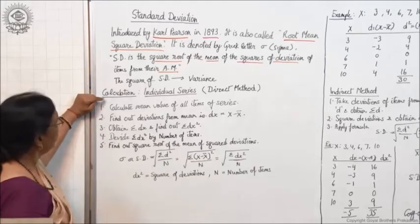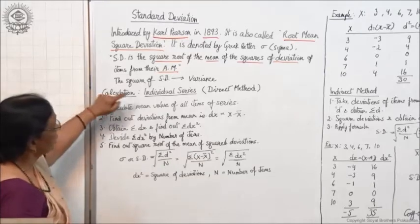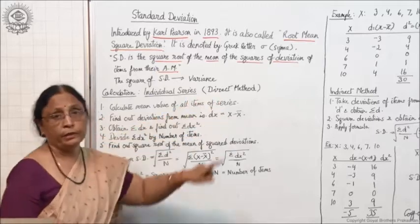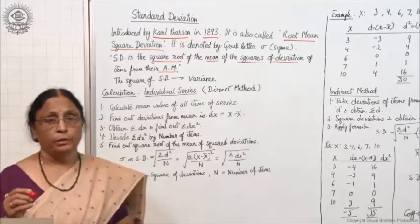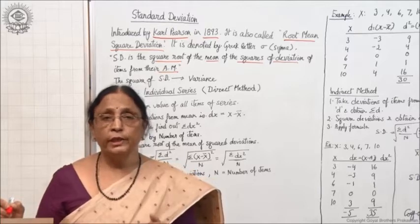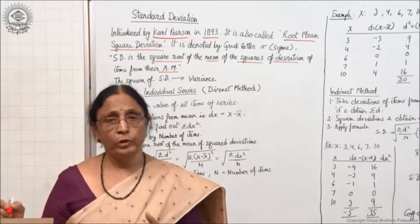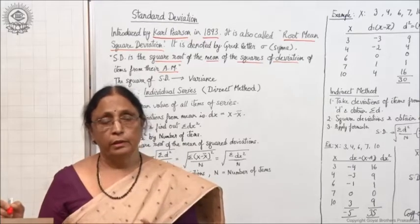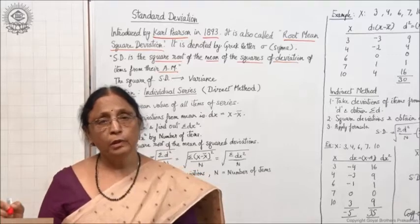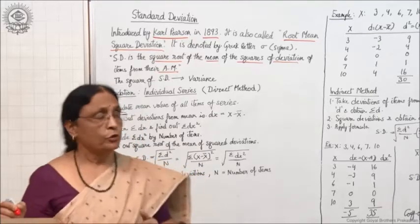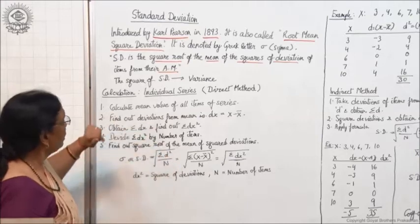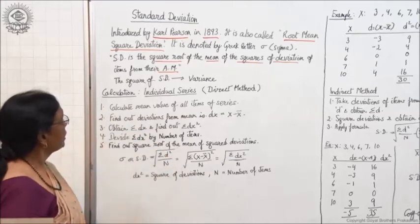Now let us see the calculation in case of individual series by the direct method. The direct method means when the deviations are taken from the actual mean. In the case of the indirect method, deviations are taken from the assumed mean. This is the direct method of calculating standard deviation.